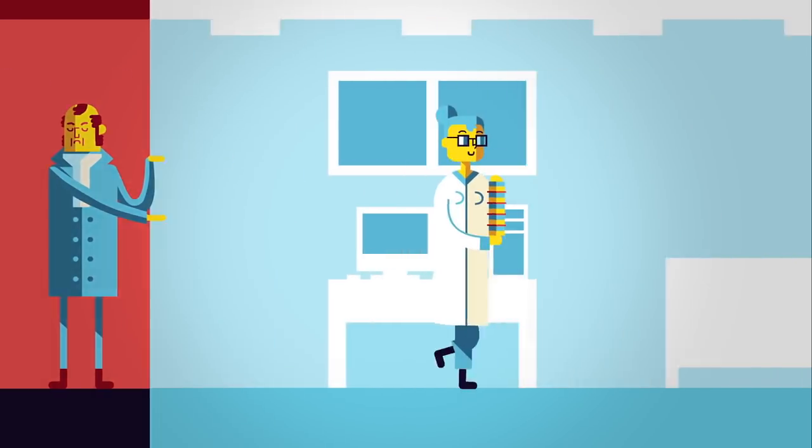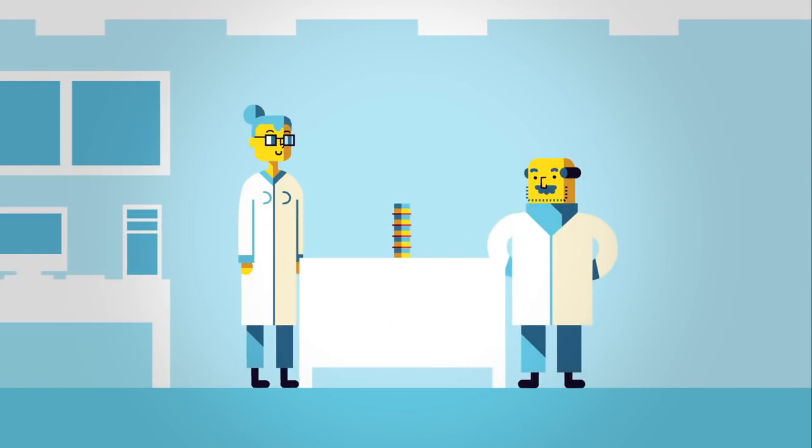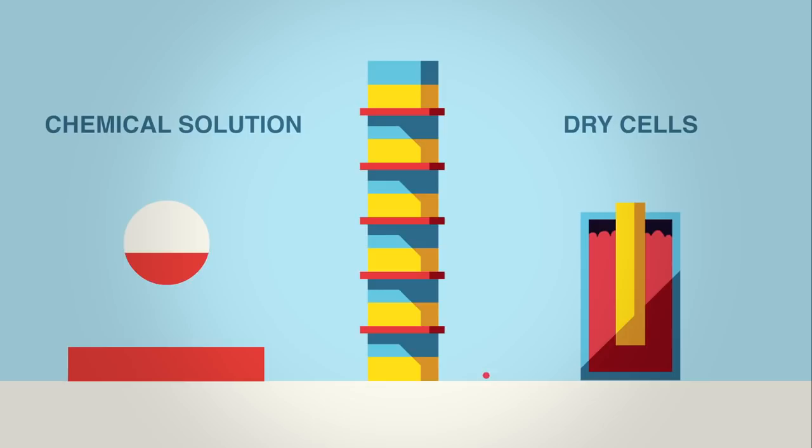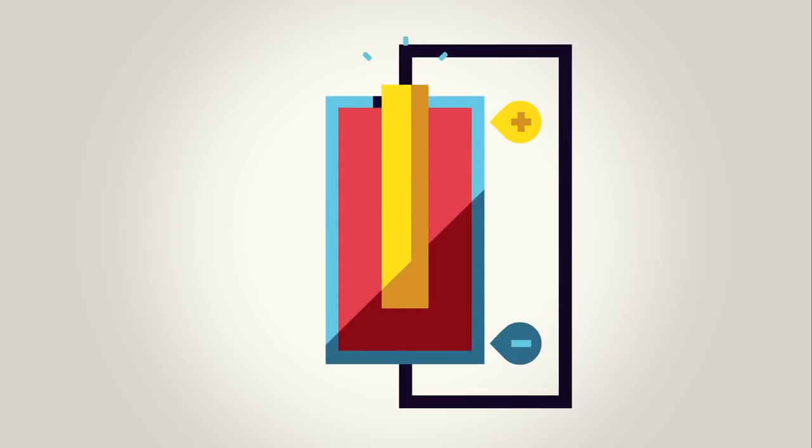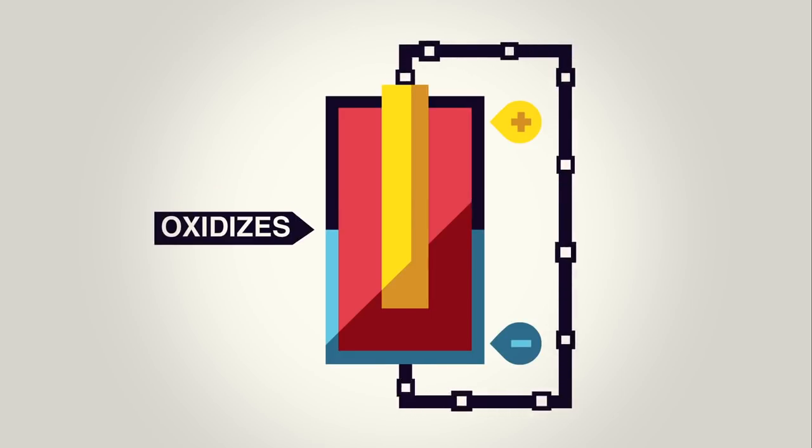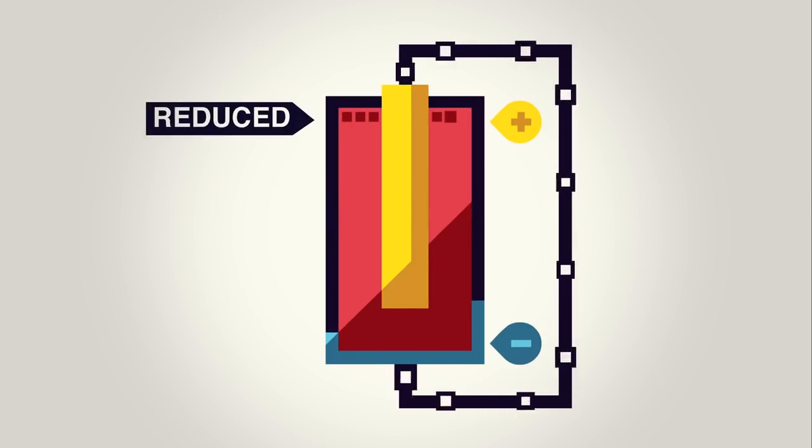Since the 1700s, scientists have improved on Volta's design. They've replaced the chemical solution with dry cells filled with chemical paste. But the principle is the same. A metal oxidizes, sending electrons to do some work before they are regained by a substance being reduced.